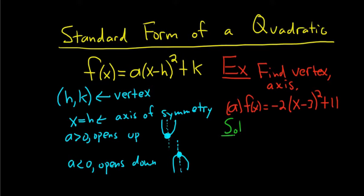So using matching, you can see that h is 3 and k is 11. So that is the vertex.